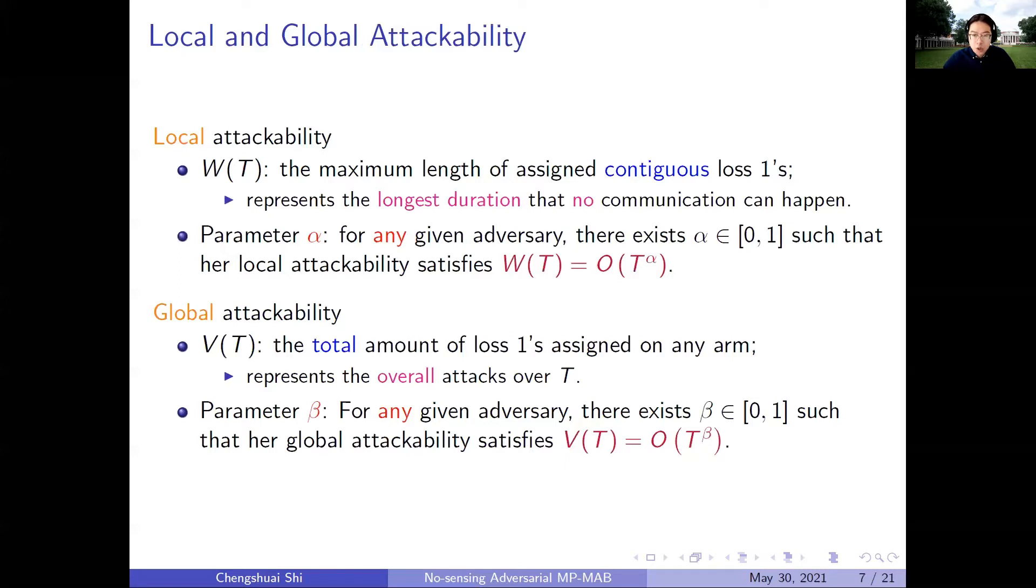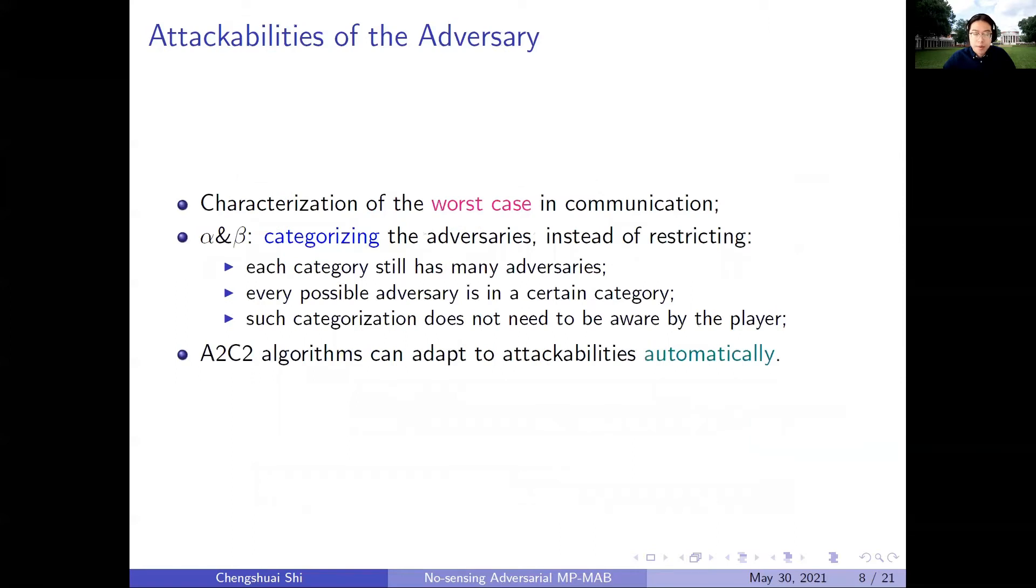It characterizes the maximum length of consecutive loss 1s. This concept captures the longest duration that no communication had happened. For the local attackability, it's ordered with respect to the horizon T, with order T to the power of α. And the α here, we call it the local attackability parameter. The second kind is the global attackability, which takes an overall view. It represents the total amount of loss 1s that are assigned on an arm during the horizon. In other words, they represent the overall attack during the horizon.